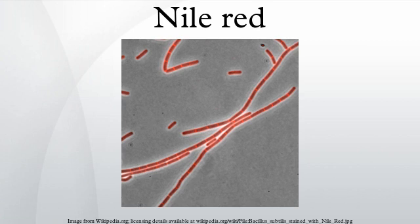Historically, Nile red was prepared by acid hydrolysis of the dye Nile blue. Alternatively, Nile red and its analogues can be prepared by acid-catalyzed condensation of corresponding 5-dialkylamino-2-nitrosophenols with 2-naphthol.